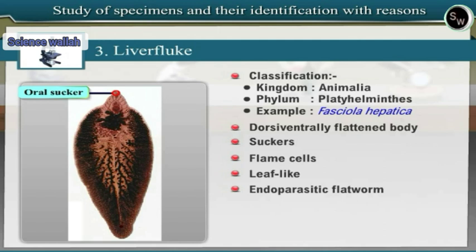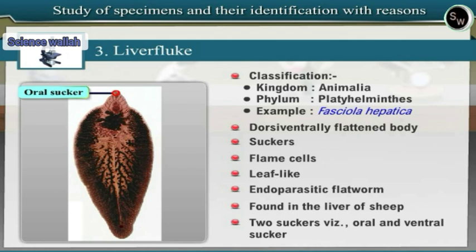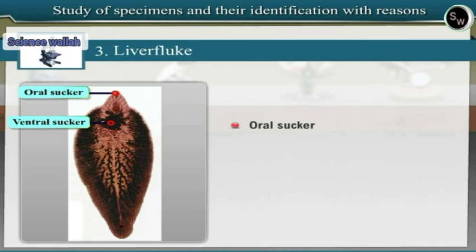Liver Fluke is provided with two suckers — oral and ventral. The oral sucker encloses the mouth. In between the oral and the ventral sucker lies an opening called genital atrium or genital pore. The body is covered with a cuticle.